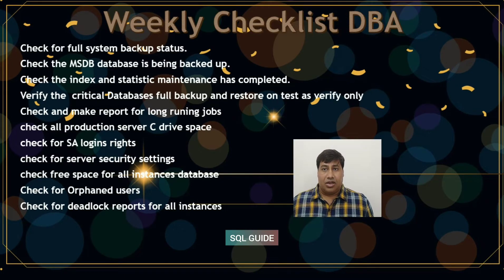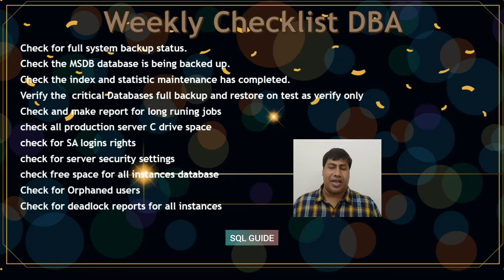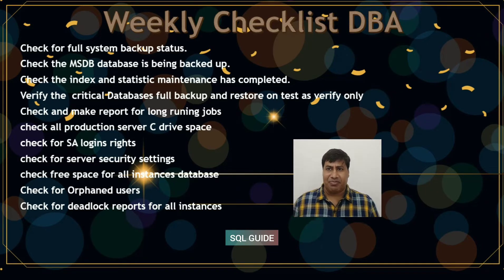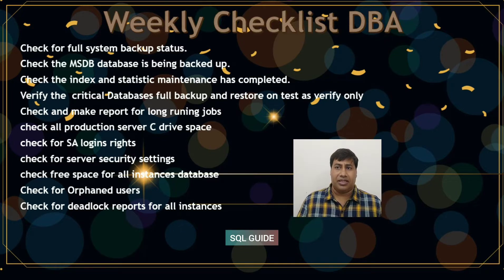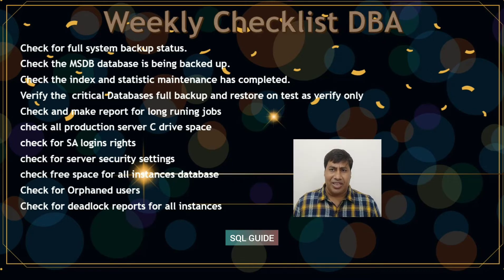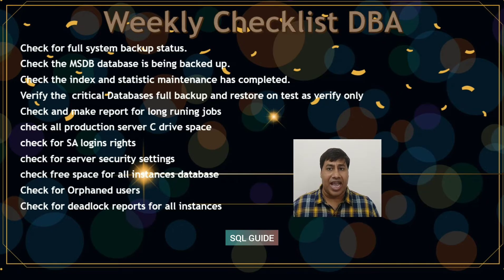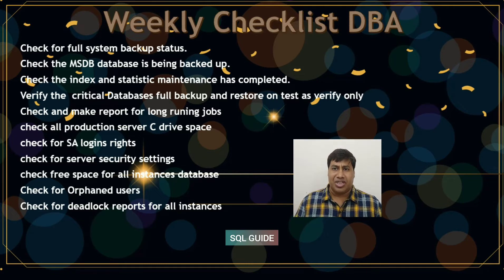For the weekly checklist of production DBA: check the full system backup status. Check that the MSDB database is being backed up. Verify that index maintenance has completed. Verify critical database full backup and restore on a test server using VERIFYONLY. Check and make a report for long-running jobs. Check all production server C drive space.